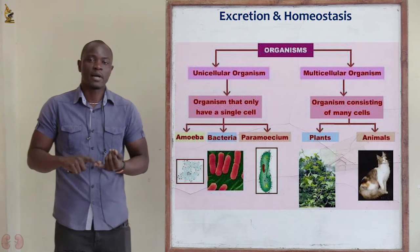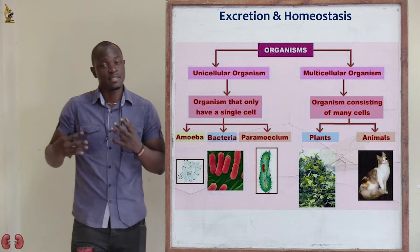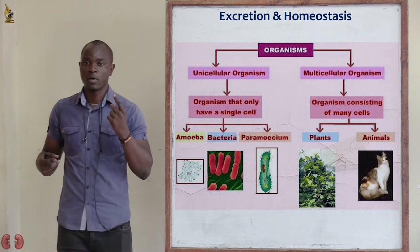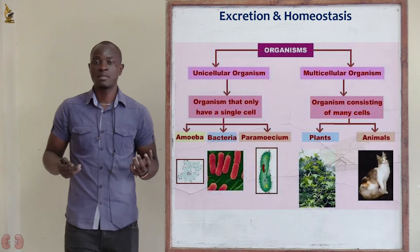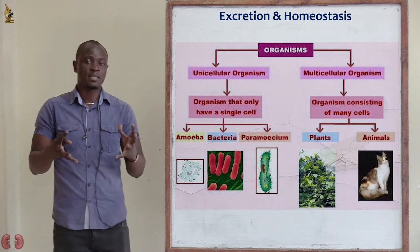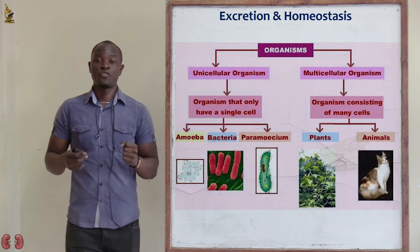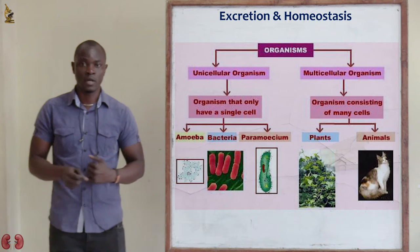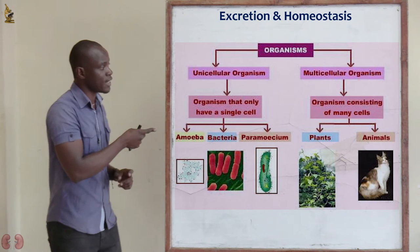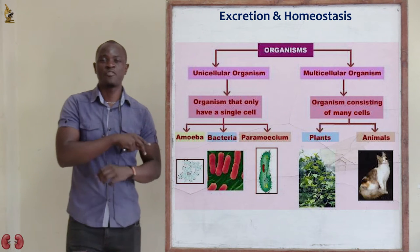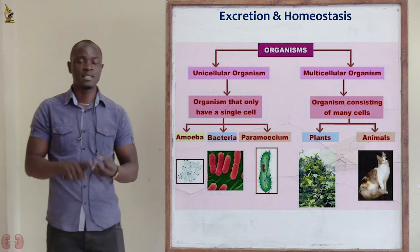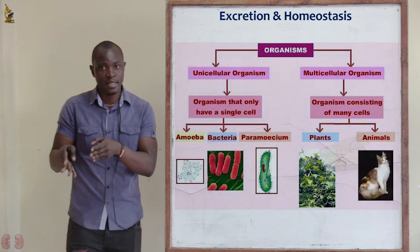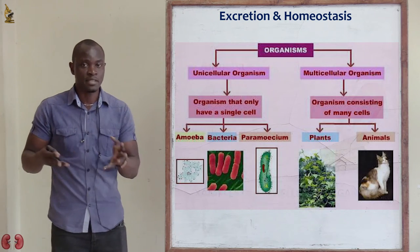The opposite of a unicellular organism is a multicellular organism. Multicellular organisms exist as very many cells brought together to form a body or a single organism — for example, human beings, pigs, and trees. Every organism which does not exist as one cell is a multicellular organism.